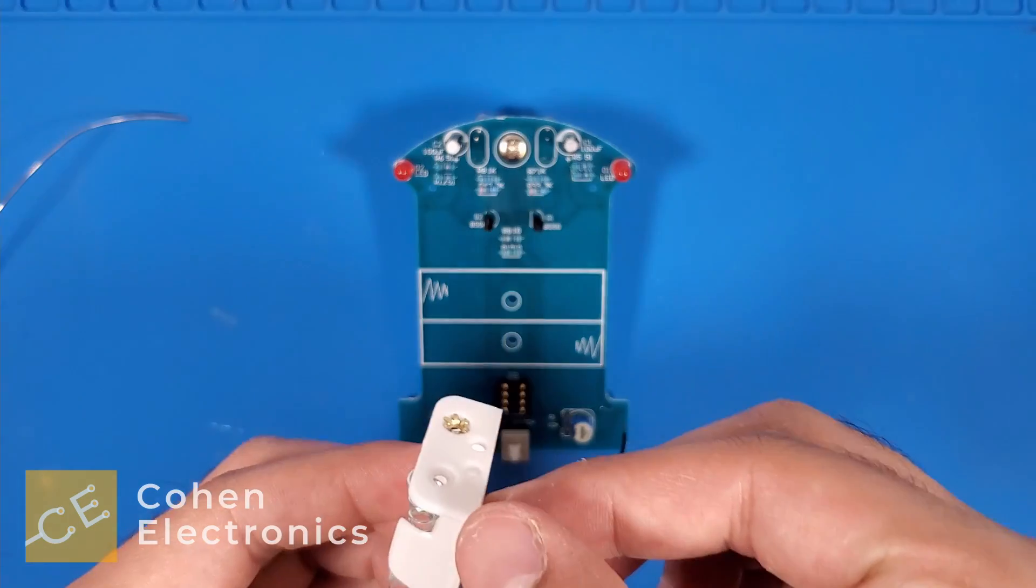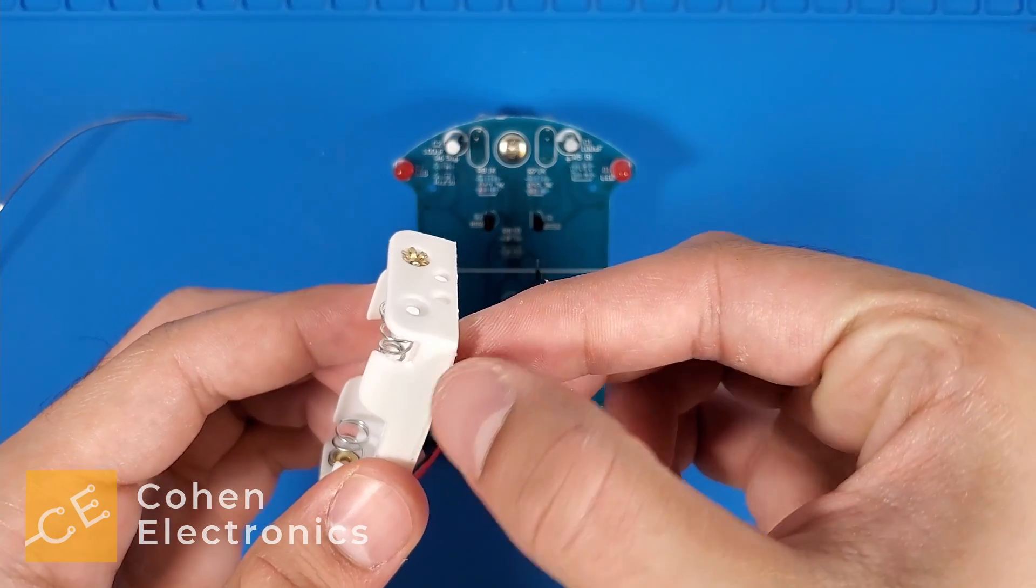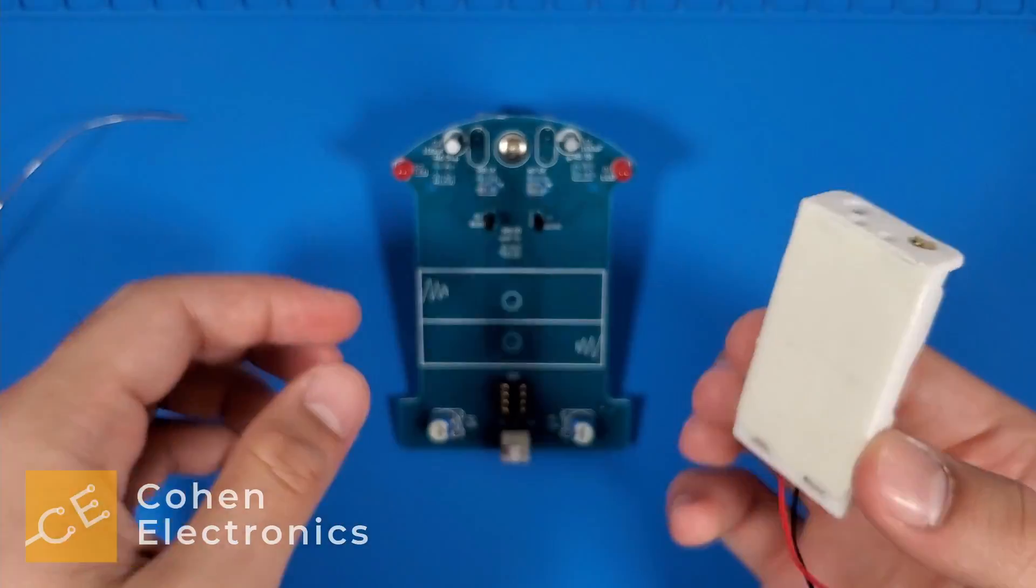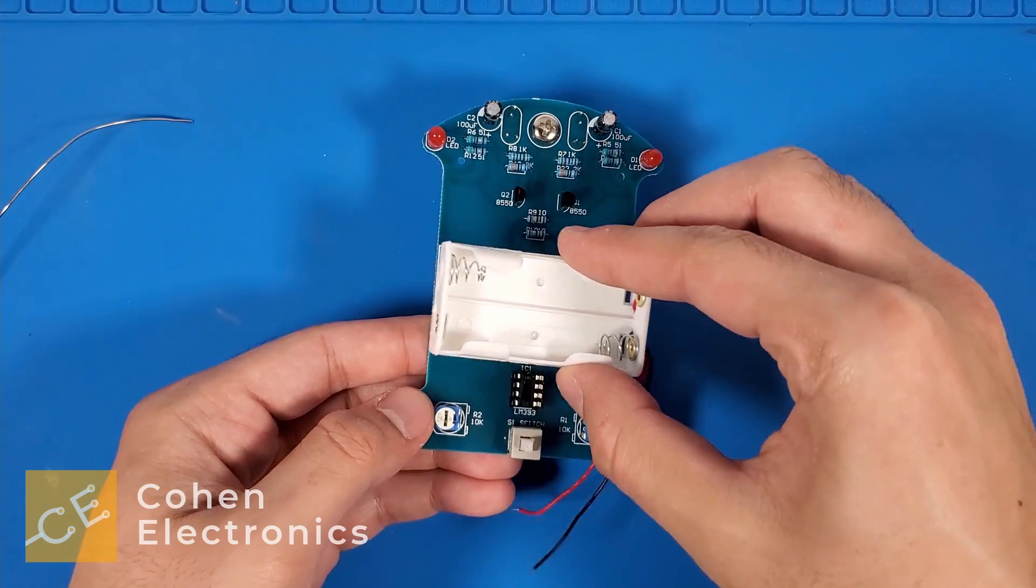With the robot body facing upwards, remove the paper covering from the adhesive strip and stick the battery holder onto the robot body while making sure that the wires face the right side.